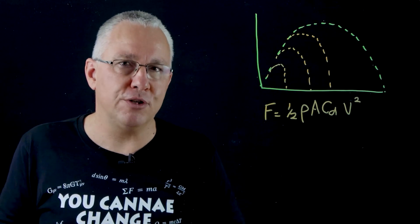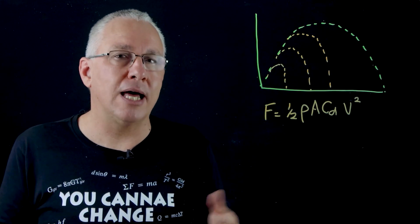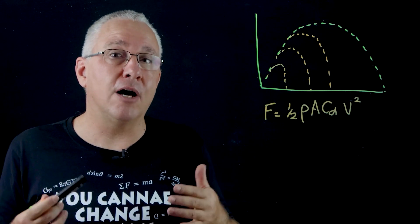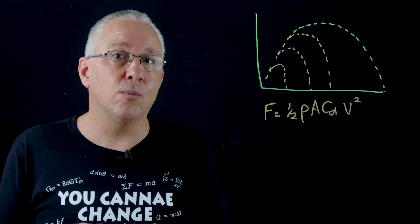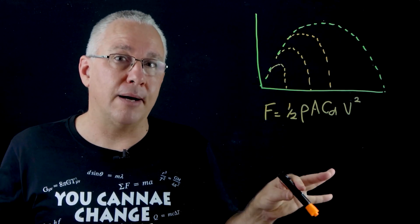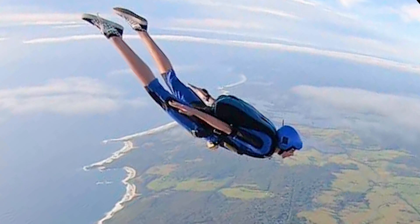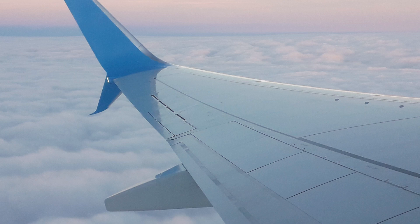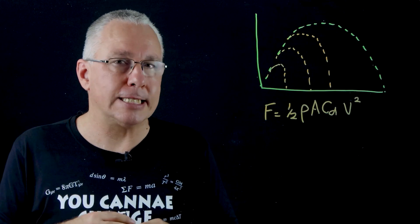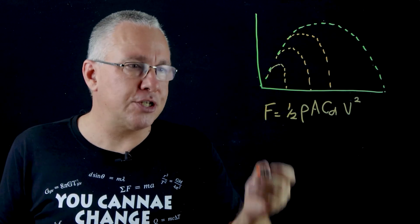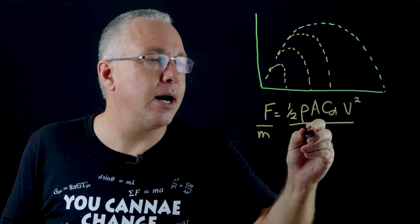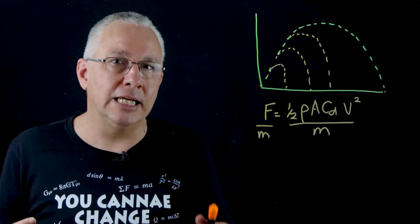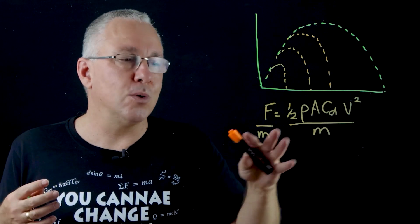A perfectly square box has a coefficient of drag around 2.1, whereas a sphere is about 0.5. A skydiver can have a C_d anywhere between 1 and 1.4 depending on whether they're spread-eagled or pointing downward. A wing in normal operation has a very small value of about 0.05. To get acceleration, we simply divide the drag force by the object's mass — which is why in my demonstration, the rubber ball and the wad of paper behaved differently.